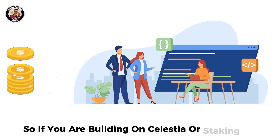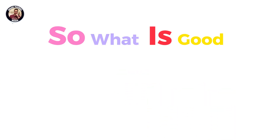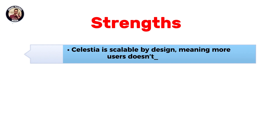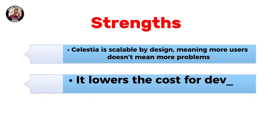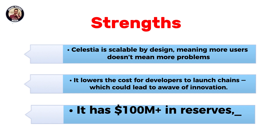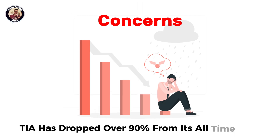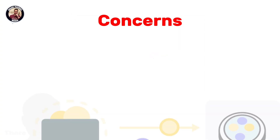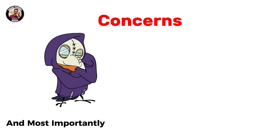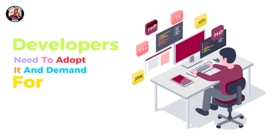So if you are building on Celestia or staking TIA, you are helping secure the future of modular blockchains. The strengths: Celestia is scalable by design, meaning more users does not mean more problems. It lowers the cost for developers to launch chains, which could lead to a wave of innovation. It has over 100 million dollars in reserves, giving it at least 6 years of runway. But there are concerns too. TIA has dropped over 90% from its all-time high, which has made some investors nervous. There are worries about insider selling and upcoming token unlocks, which could create price pressure. And most importantly, modular blockchains are still a new concept — for Celestia to succeed, developers need to adopt it, and demand for blob space must grow.